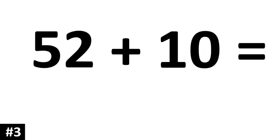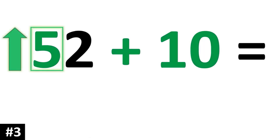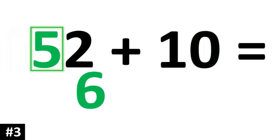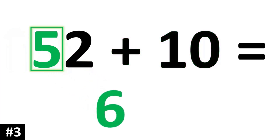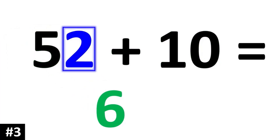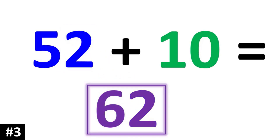52 plus 10: to add by 10, the tens digit of 52 is a 5, so that 5 is going to become a 6. And the ones digit stays the same. So 52 plus 10 is 62.